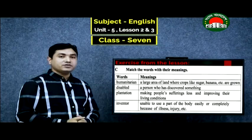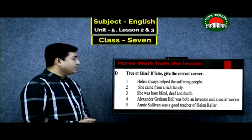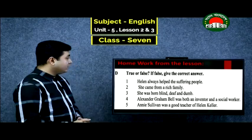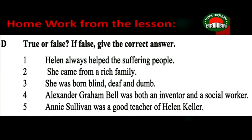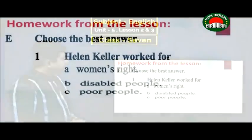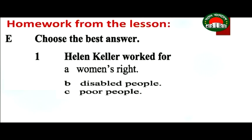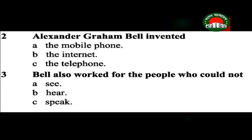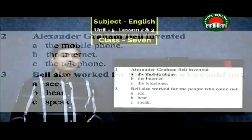Dear learners, I hope this matching exercise is clear to you. Now it's time for homework from this lesson. You have true or false questions: Helen always helped the suffering people; she came from a rich family; she was born blind, deaf and dumb; Alexander Graham Bell was both an inventor and a social worker; Annie Sullivan was a good teacher of Helen Keller. You also have multiple choice questions to complete. Do the homework carefully by reading the text.